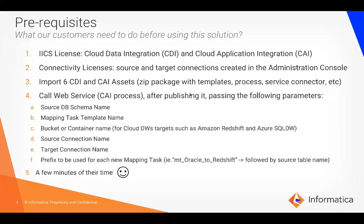They're going to need to import six CDI and CAI assets, and this is part of a zip package that contains templates, the process, service connector, and so on. And then they're going to call a web tab — a CAI process after publishing it, passing the following parameters.